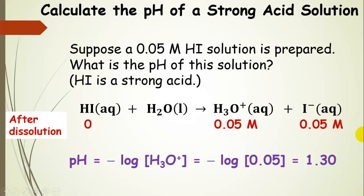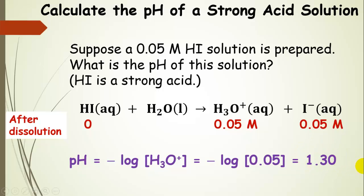Let's calculate the pH of a strong acid solution. We have a 0.05 molar hydroiodic acid solution and we want to know the pH. When we prepare a 0.05 molar hydroiodic acid solution, essentially none remains undissociated — we have produced 0.05 molar hydronium and 0.05 molar iodide anion. pH only relates to the hydronium ion concentration, so plugging in this concentration gives us a pH of 1.30, which is very acidic.